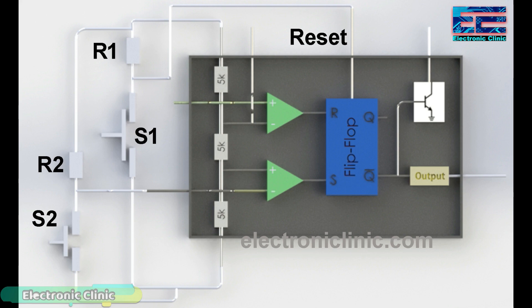Let's consider that no switch is initially pressed. The voltage at the inverting input of the second comparator is 12 volts, which is greater than the voltage at the non-inverting input. This comparator outputs 0 which is fed to the S-pin of the flip-flop, then Q-bar outputs 1 which is converted into 0 by the output stage, so the output of the 555 timer will be low. This output will remain low until we press switch S2.